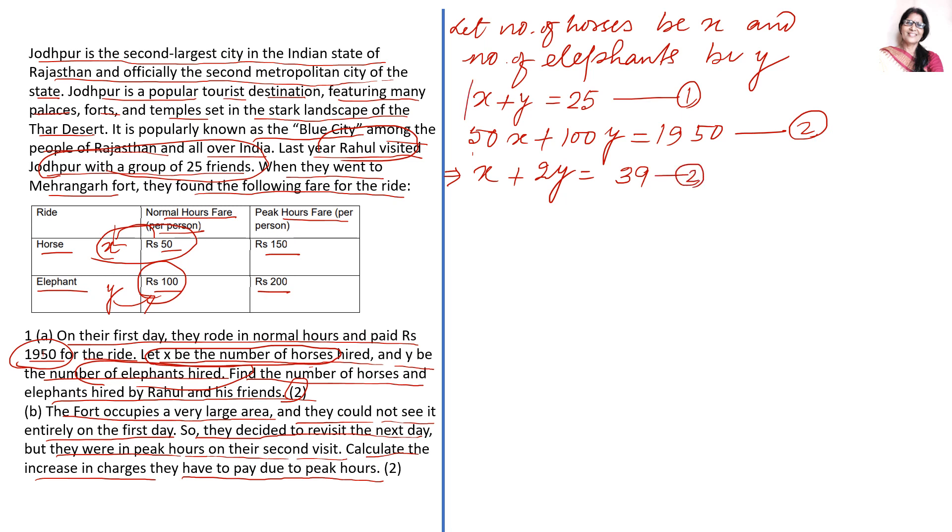Now I will solve these two equations. Just subtracting equation 1 from equation 2, Y is equal to 39 minus 25, that will be 14. So Y, we have taken as number of elephants, equals 14.